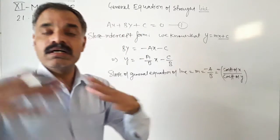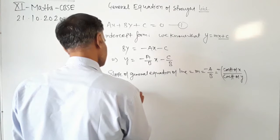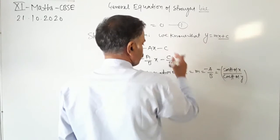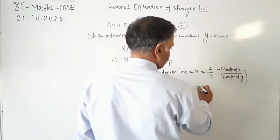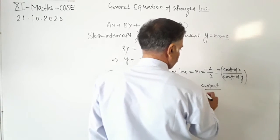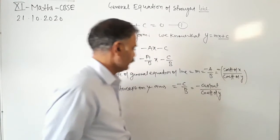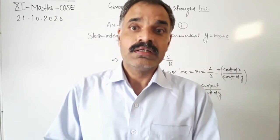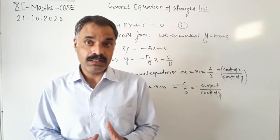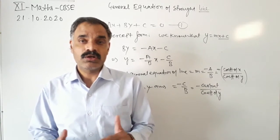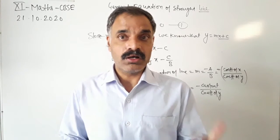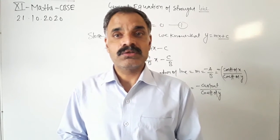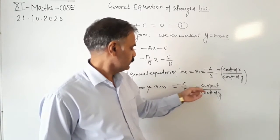The intercept on the Y axis is equal to minus C upon B, that is minus constant divided by coefficient of Y. So in this way we can convert the given general equation of the line in slope-intercept form, or we can find the slope and the intercept on the Y axis whenever the general equation of the line is given.